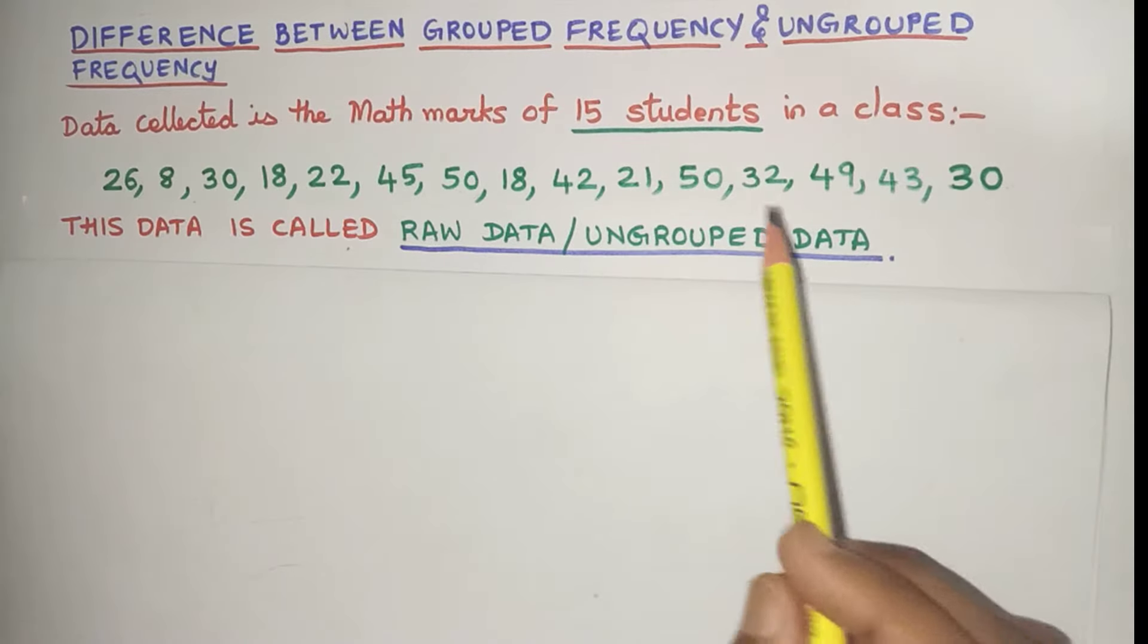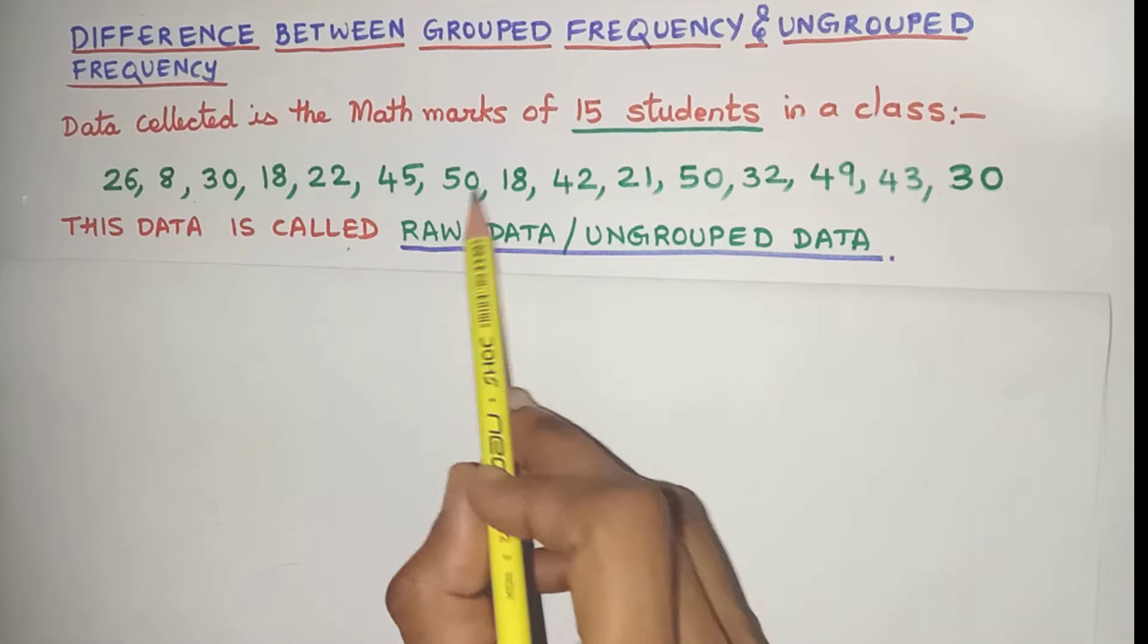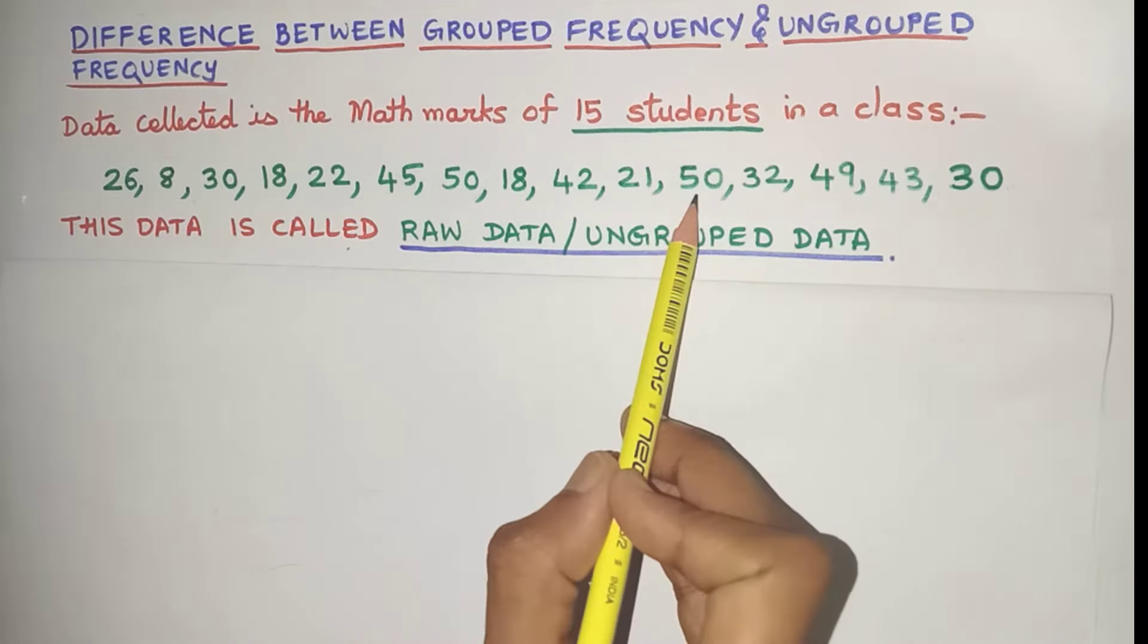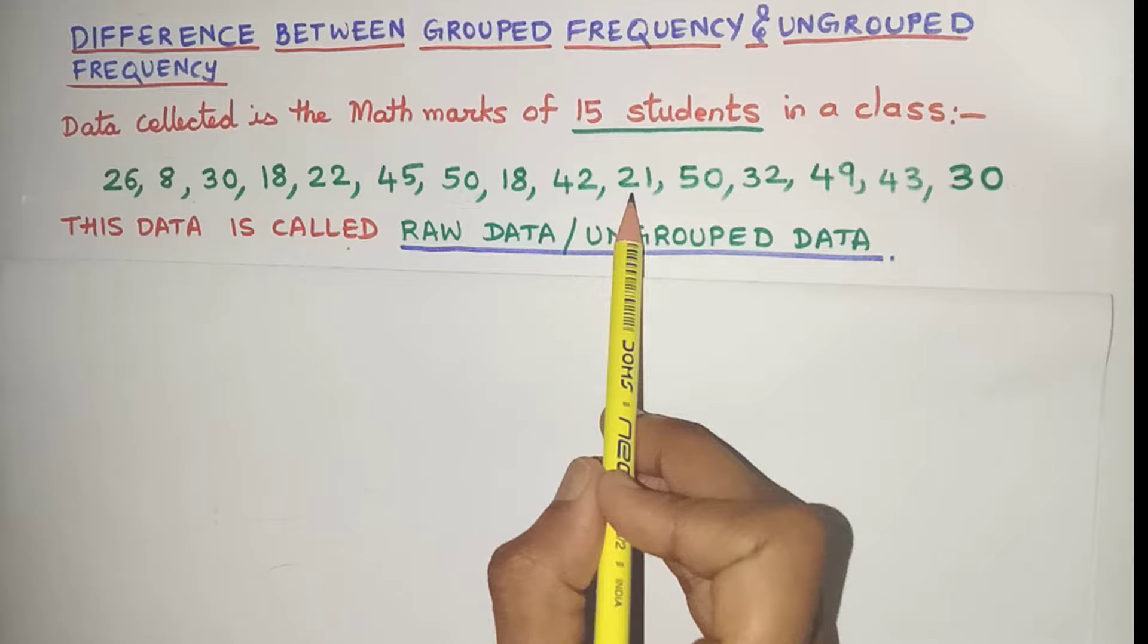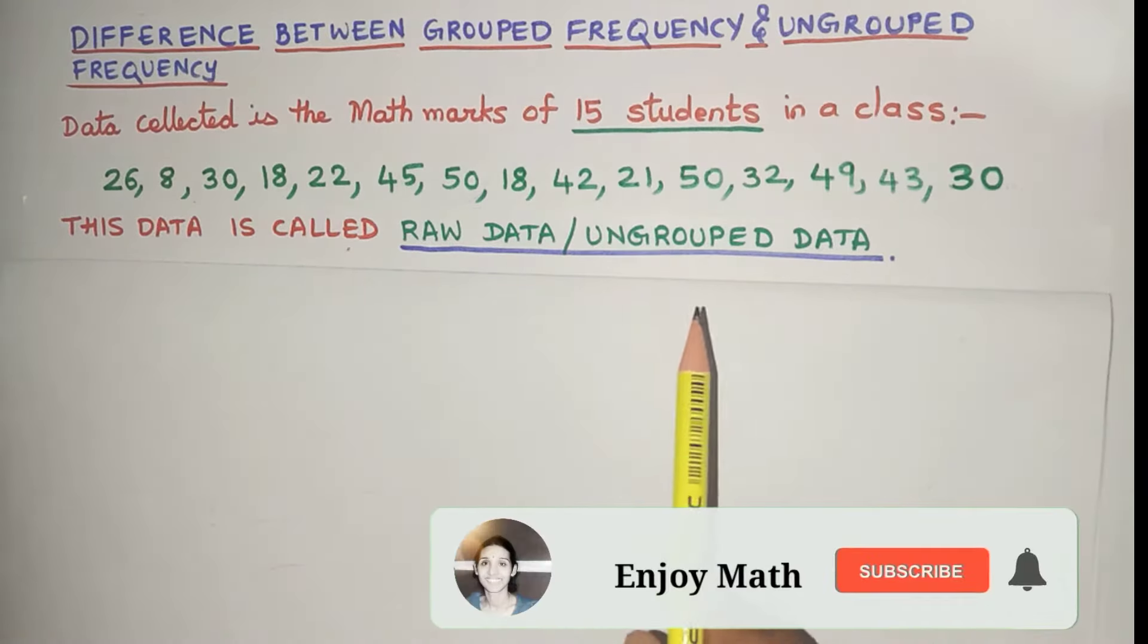We can also find out what is the frequency of the individual marks. For example, I can say that there are two students who have got 50 marks, one student who has got 21 marks. So we can find out the frequency of each data value.